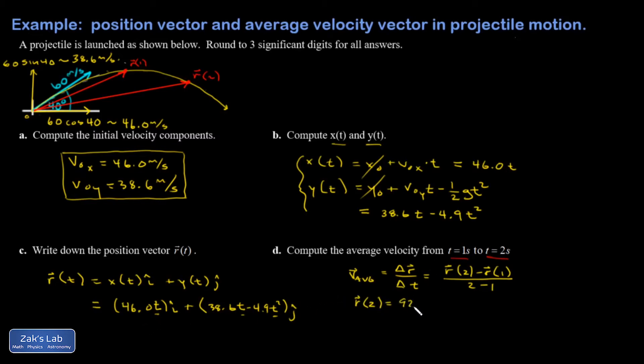So what I got for r of 2, I just plugged in t equals 2 into this and I got 92 i hat plus 57.6 j hat. R of 1, I got 46 i hat plus 33.7 j hat.